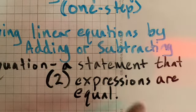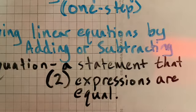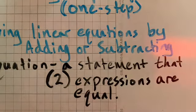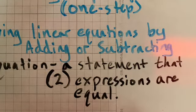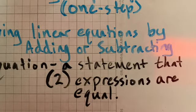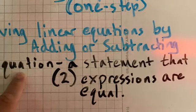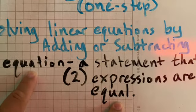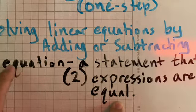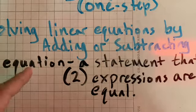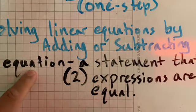So we've already gone over what an expression is. An expression is made up of numbers, variables, and operations. So an expression was x plus 2, 3 minus y. Again, an expression does not have an equal sign. Think of equation and the word equal. They're almost exactly the same. So an equation has to have an equal sign.